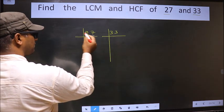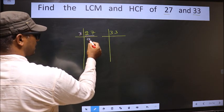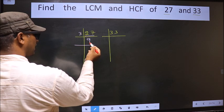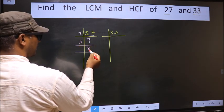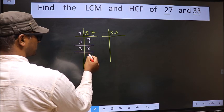Here we have 27. 27 is 3 times 9 equals 27. Now we have 9. 9 is 3 times 3 equals 9. Now we have 3. 3 is a prime number, so 3 times 1 equals 3.